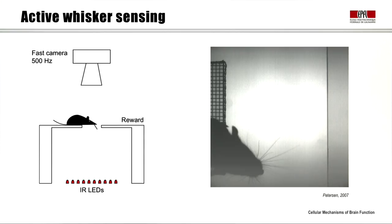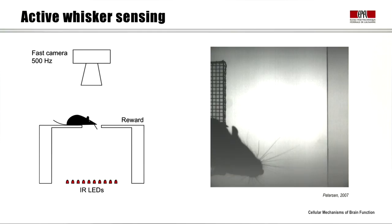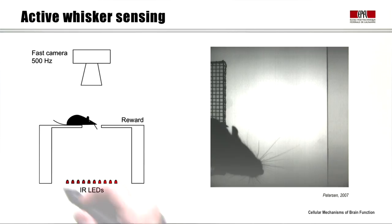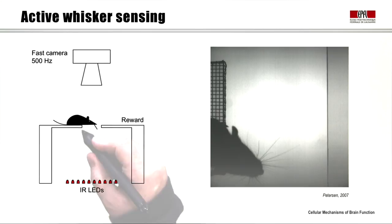Mice are nocturnal animals that live in tunnels, and one way they obtain spatial information about their immediate surroundings is by using their whiskers, which they actively move to explore their environment. In the so-called gap-crossing task, developed by Hudson and Masterton, a mouse is placed on an elevated platform in the dark under infrared illumination. The mouse needs to identify the location of a target platform to jump to, and the gap between the two platforms is so large that the only way the mouse can identify the target is by using its whiskers to reach across the gap.